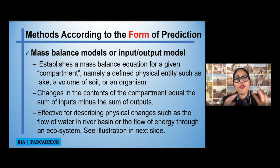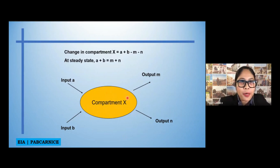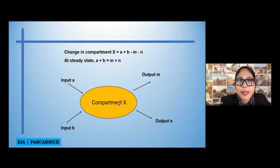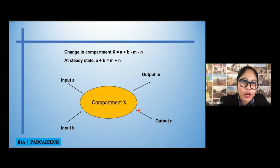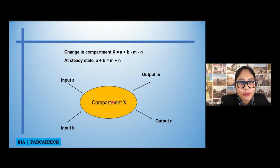I can explain more with this illustration. For example, you have a compartment X and you know the exact volume of compartment X. If there is an input A, your compartment X will be added with your input A, and you will know what is the current volume in your compartment X. If there is an output N, you will know the volume of output N, and therefore you can still calculate what will be the volume in compartment X. The same also with input B — if you know the exact amount of input B, then you can also know the current volume of compartment X.